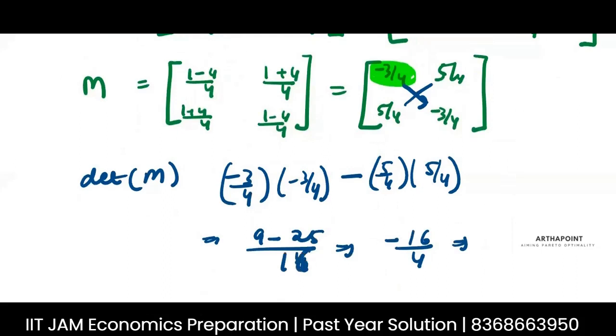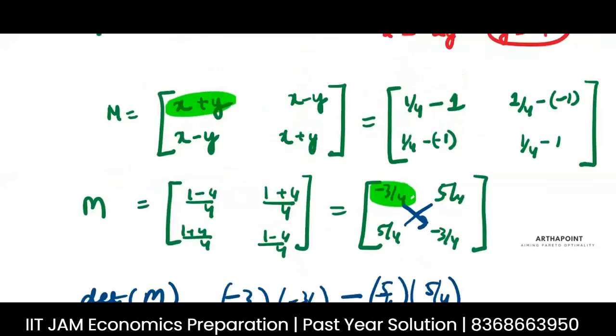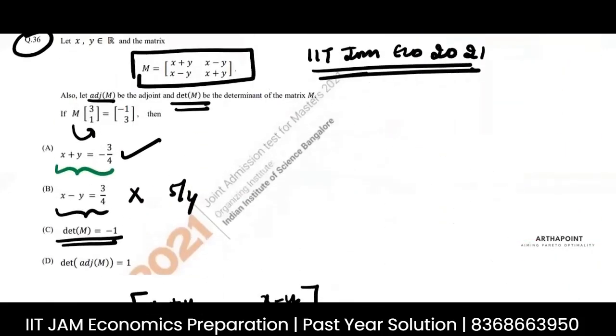So you will get 9 minus 25 by 4, which will be minus 16 by 4, which would be minus 16 by 16 because 4 into 4, this would be minus 16 by 16 which would be minus 1. So this is also correct that the determinant is minus 1.